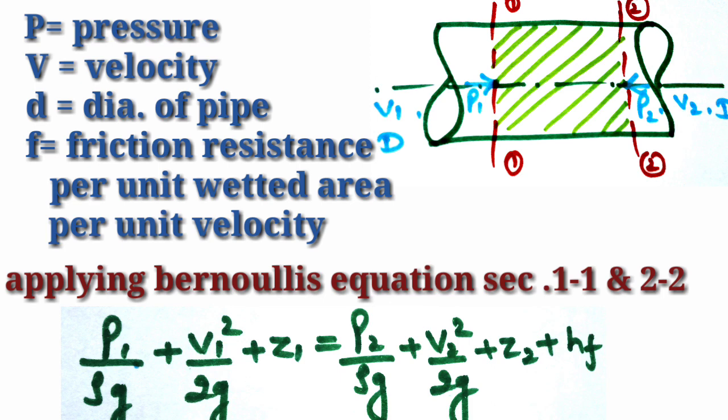The diameter is the same because we are taking the same pipe with constant diameter. When water flows through the pipe, the pressure will change. So here we have P1 and P2 representing the pressure change along the pipe.